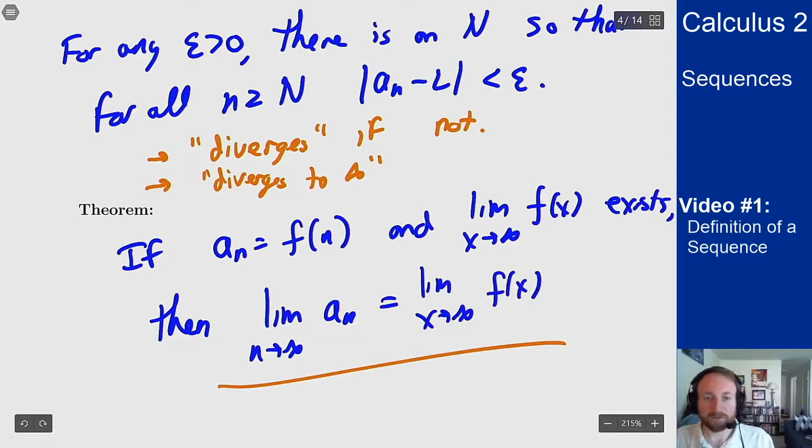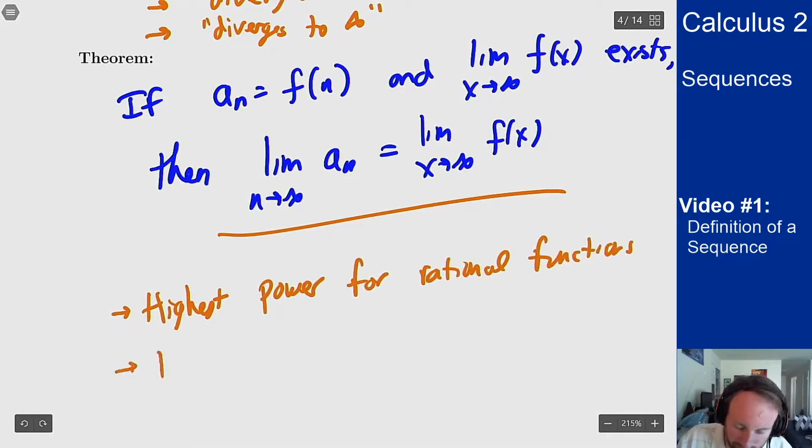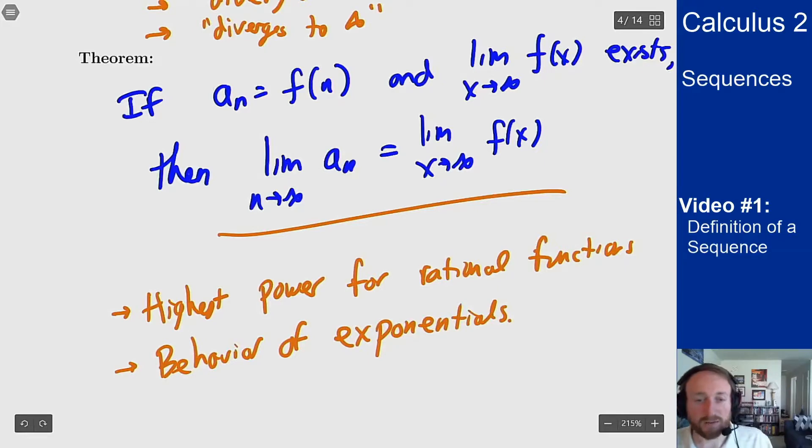If my sequence is defined by a function and I can look at that function's limit at infinity, which is with all of our tricks we had before, things like highest power rule, rational functions, behaviors of exponentials, these all gave us ways to talk about what happens to a function at infinity. But now we can also use those rules to talk about what happens to a sequence at infinity, provided they line up in the same way.